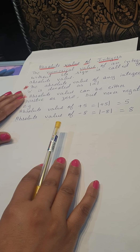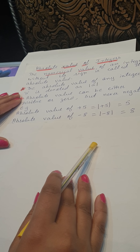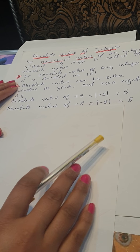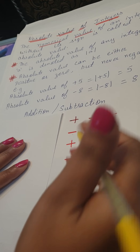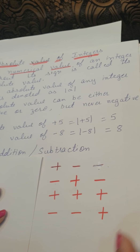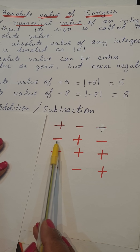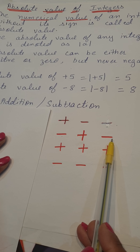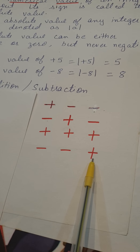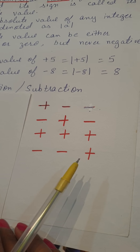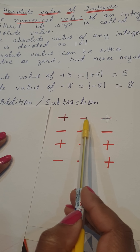Now, in the previous class we did a few questions on addition and subtraction. First we will recall the rules. For addition and subtraction: plus and minus together is always minus. Minus and plus together is always minus. Plus and plus is always plus. Minus and minus is always plus.